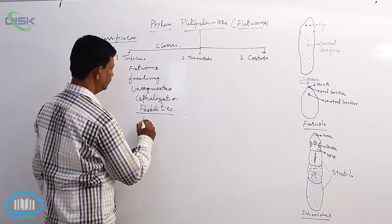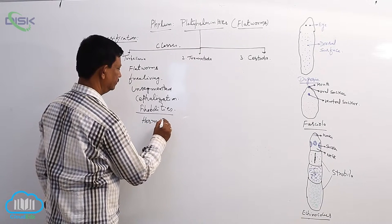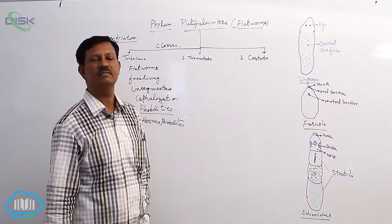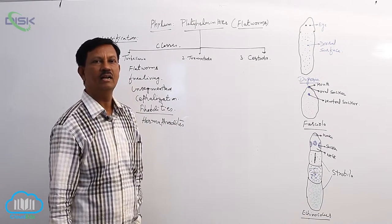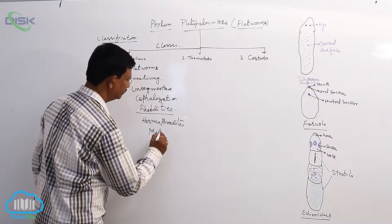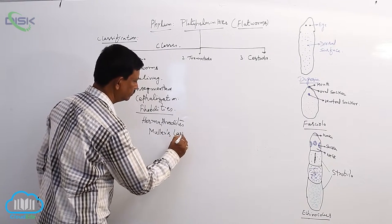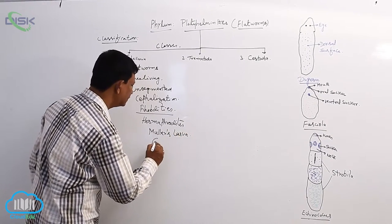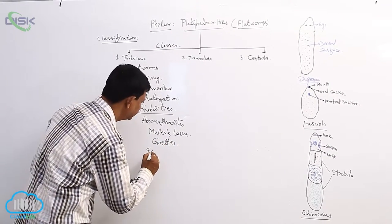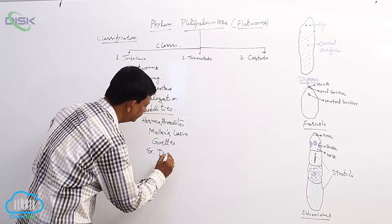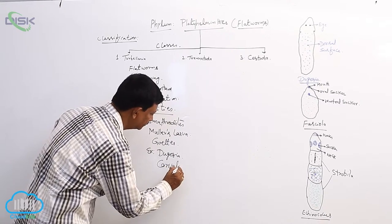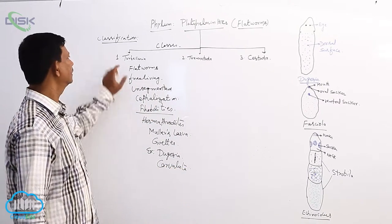They are hermaphrodites. Both male and female reproductive organs are present in the same individual, and development includes Muller's larvae. Goet's larvae is also present in some animals. Examples are Dugesia and Convoluta. These two examples come under Turbellaria.